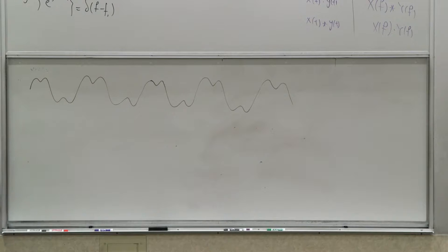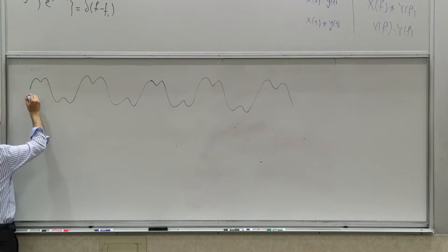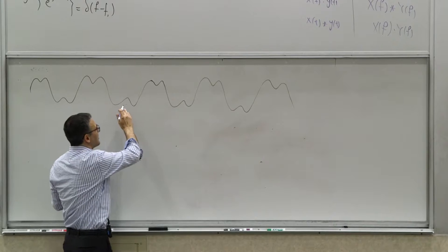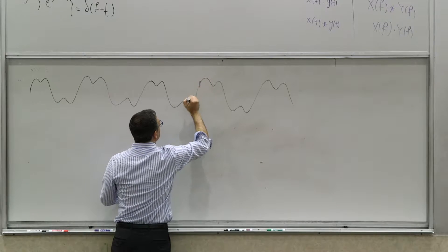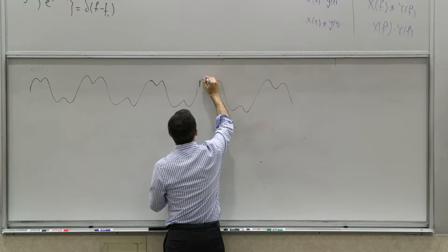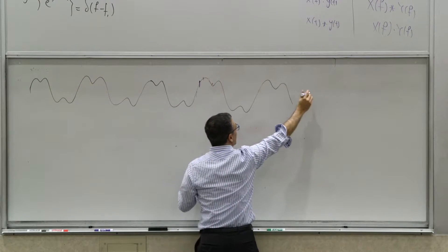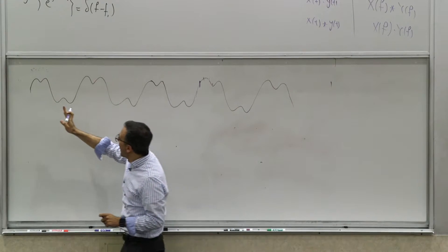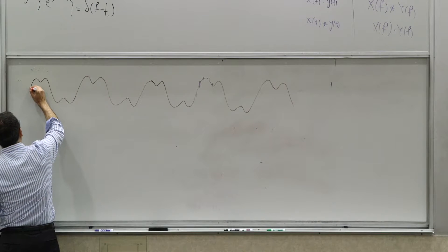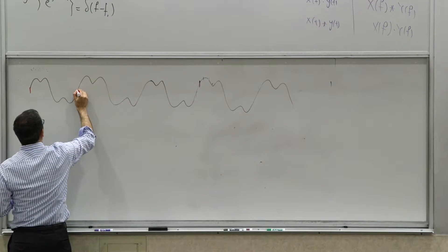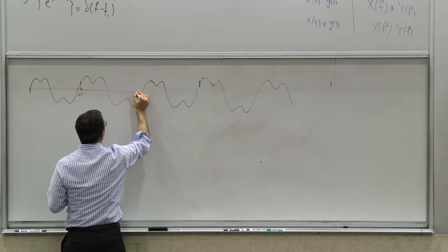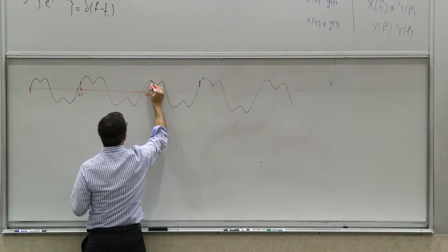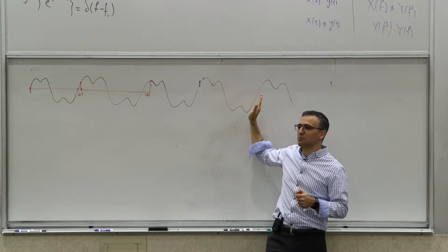What you can do instead is: you want to reconstruct this shape, so what if you sample it once here, then wait, because you can't sample very quickly, but the next time you sample, you start from that same point plus a little delta. So you sample here, wait, and the next time sample a little bit farther out. Let's say you do it every period: sample here, wait a period plus some delta t and sample here, then wait a period plus two delta t and sample here, and keep sampling at intervals plus a little bit of delta.